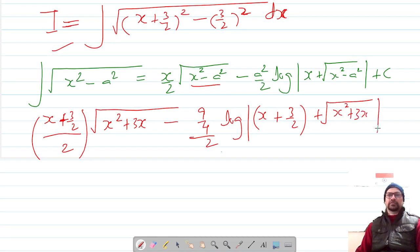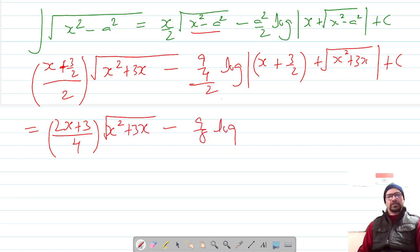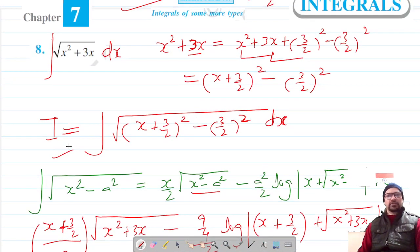Now if we simplify this there should be 2x plus 3 by 4 and under root of x square plus 3x minus 9 by 8 log of 2x plus 3 by 2 in 2 plus root of x square plus 3x. This also is our question number eight.